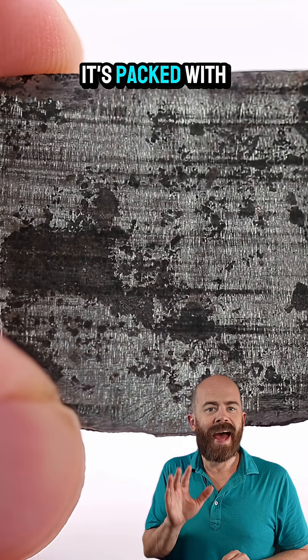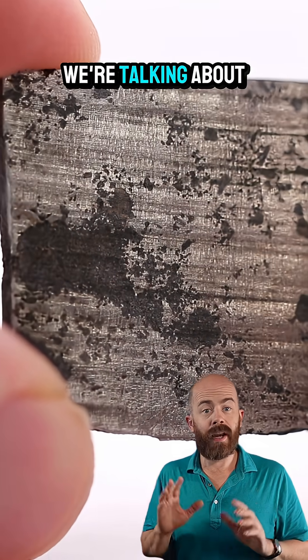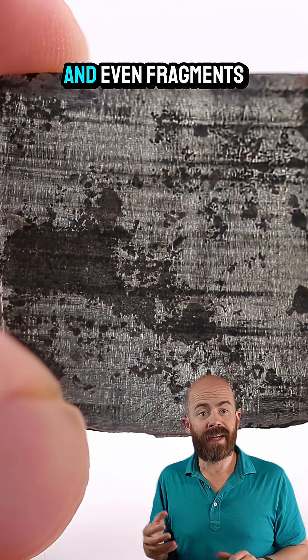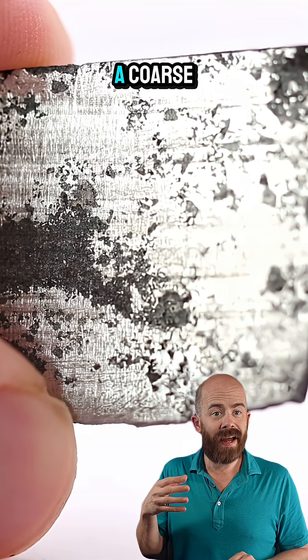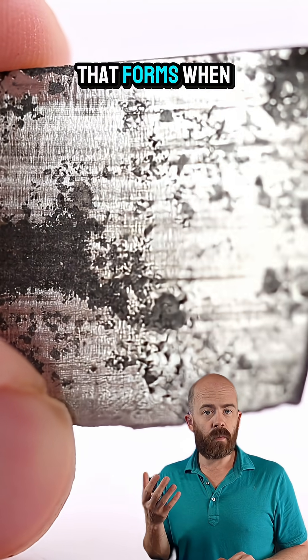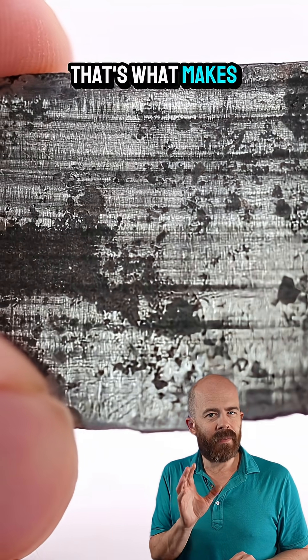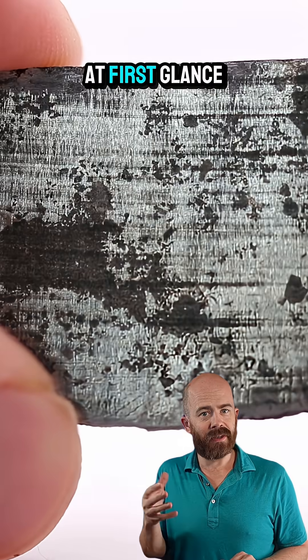It isn't just metal. It's packed with silicate inclusions. We're talking about minerals like olivine and pyroxene and even fragments of gabbro, a coarse-grained igneous rock that forms when magma cools. That's what makes this meteorite look dirty at first glance.